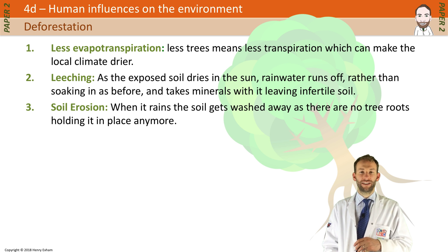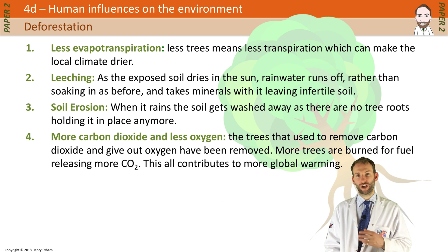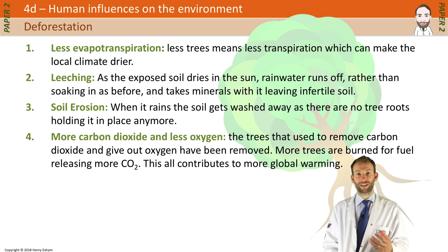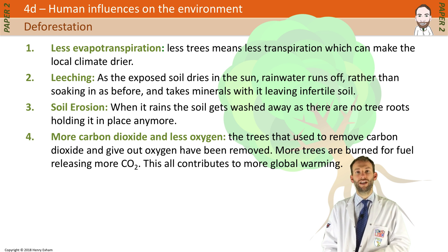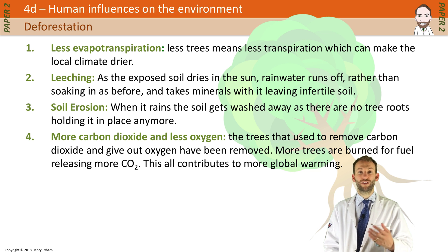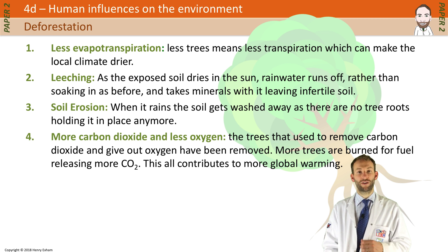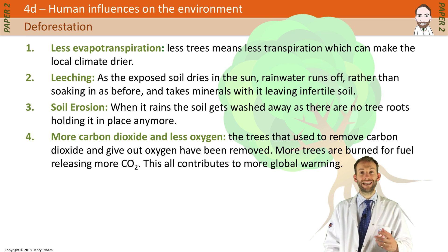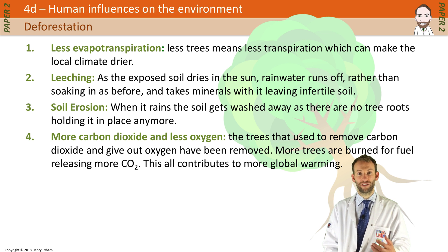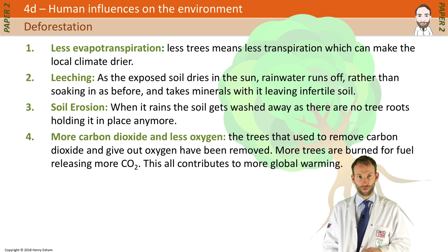Finally, there is a complete change in the balance of carbon dioxide and oxygen in the atmosphere. There is much more carbon dioxide than oxygen, because the trees that used to remove carbon dioxide through photosynthesis are now gone — and they're no longer giving out oxygen either. Also, more trees are being burnt for fuel, which releases even more CO2. This whole process contributes more and more to global warming.